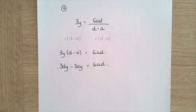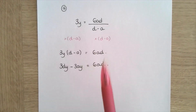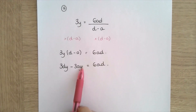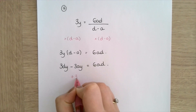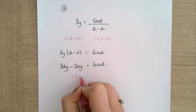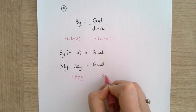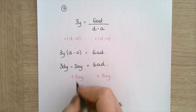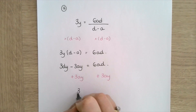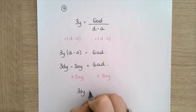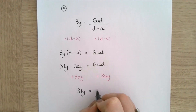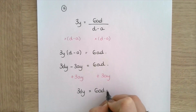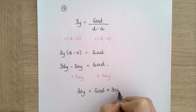Now what I'm going to do is make a the subject, and therefore I need to get all my a's onto the same side. So I'm going to add 3ay to both sides, leaving me with 3dy is equal to 6ad plus 3ay.